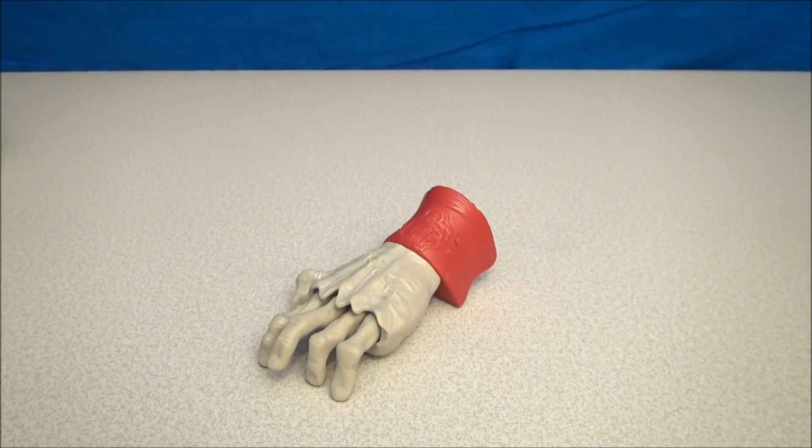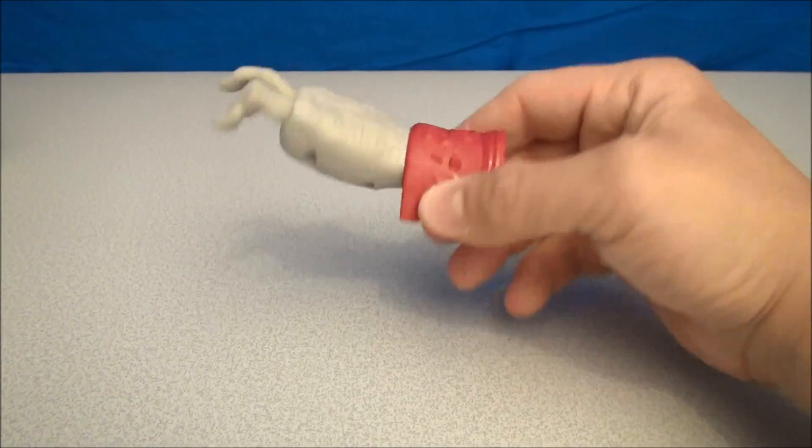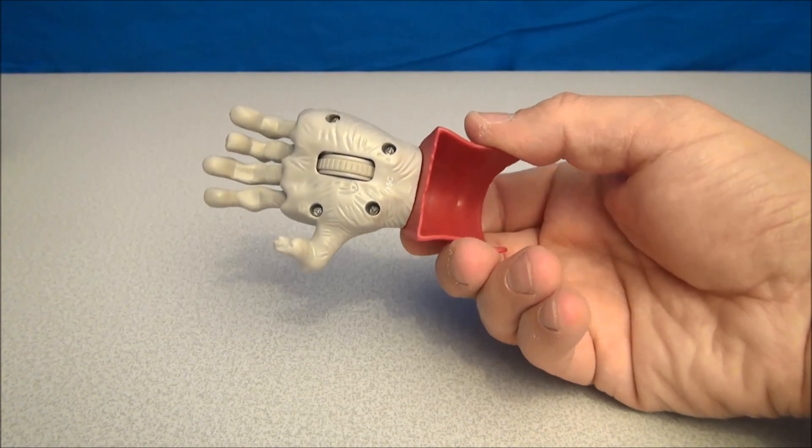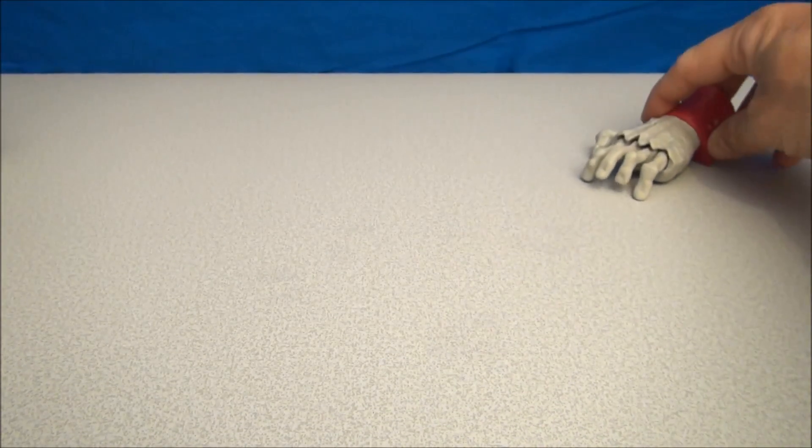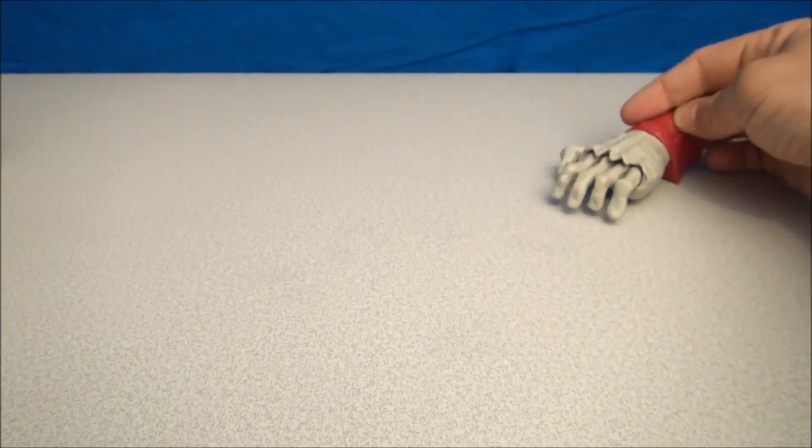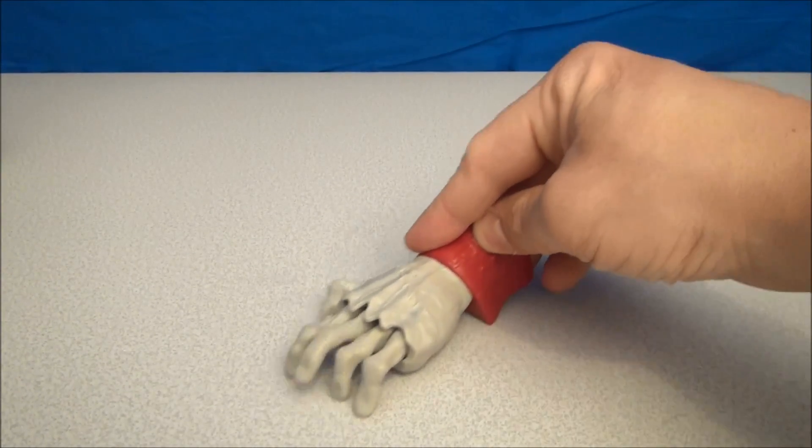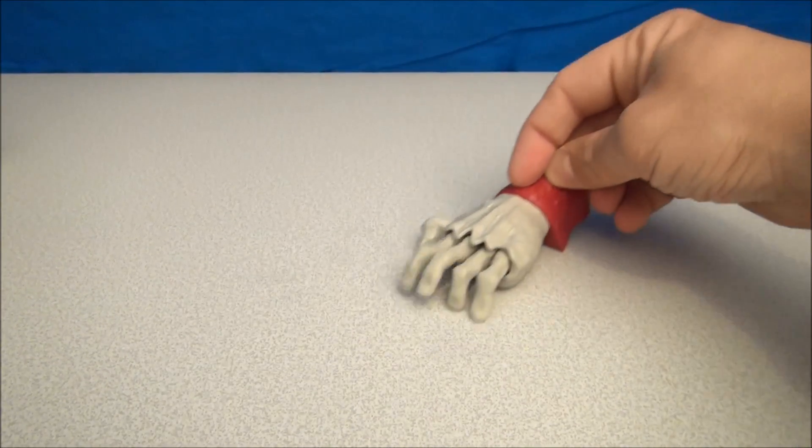And lastly we have the Crawling Zombie Hand. Check that one out. Got a little wheel on the bottom there. The fingers are all corroded and deteriorating. But this one actually looks kind of creepy. When you do that it comes at you, crawling at you. I don't like it. I'm going to stop now because it's making me scared.